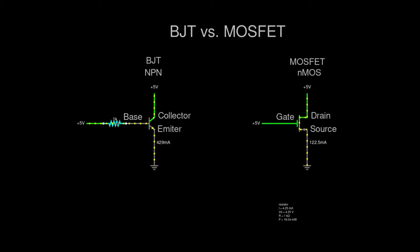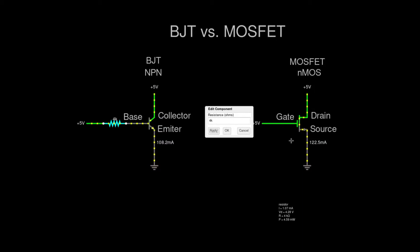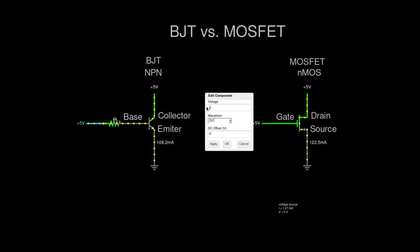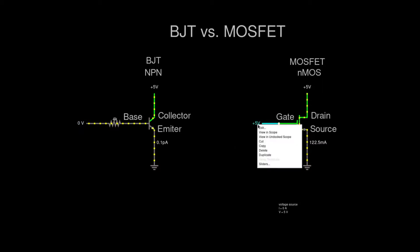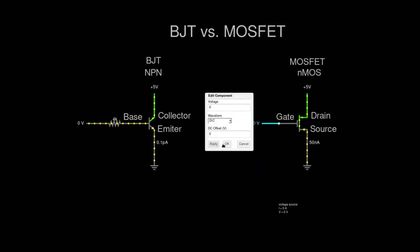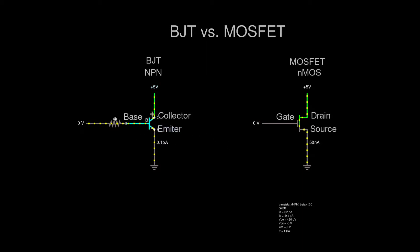We can change the resistance from 1k to 2k — it gets better. Let's change it to 4k; that's almost the same as the MOSFET current. We can change the voltage to 0 volts, as in the switch analogy, and we can see they both have basically 0 amps going through. In the BJT we can see nanoamps, and in the MOSFET it's picoamps — about 50,000 times smaller current.